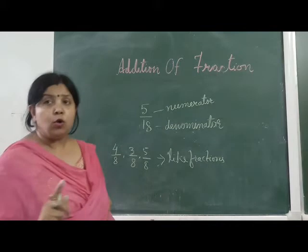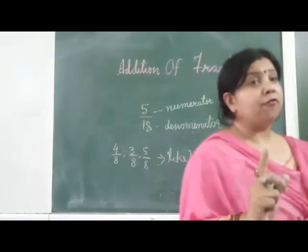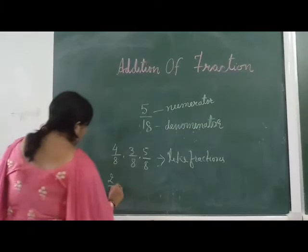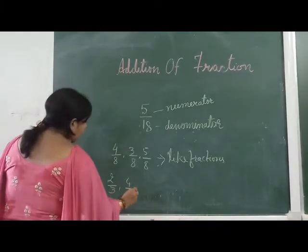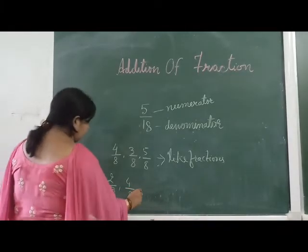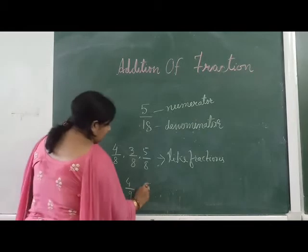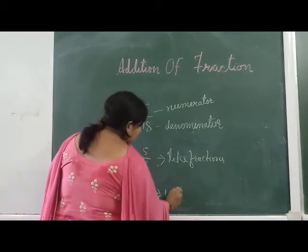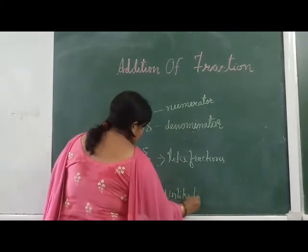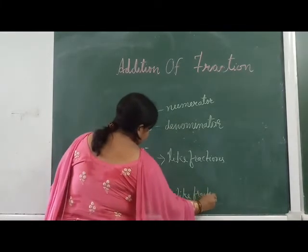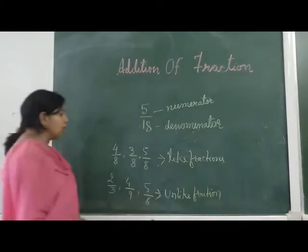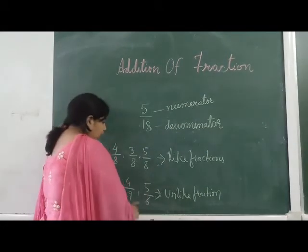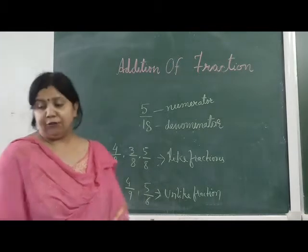When two or more fractions have different denominators, they are called unlike fractions. Like two by three, four by nine, five by six — these are called unlike fractions. Like fractions have the same denominator; unlike fractions have different denominators.